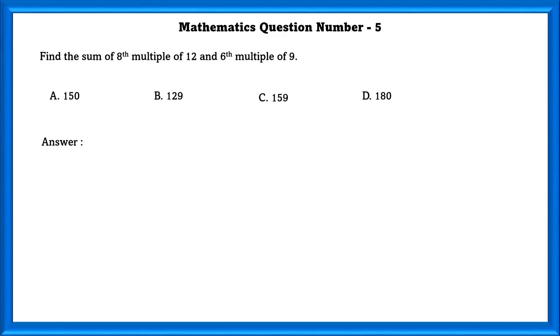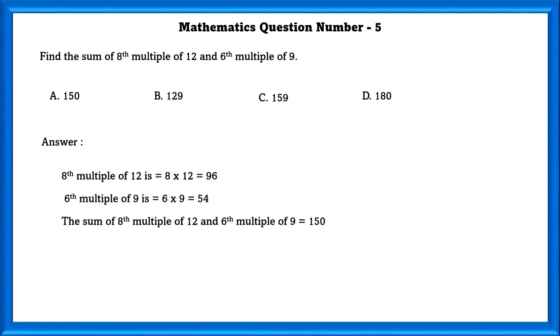Mathematics question number 5. Find the sum of 8th multiple of 12 and 6th multiple of 9. The 8th multiple of 12 is equal to 96 and the 6th multiple of 9 is equal to 54. Adding these two, we will get 150.